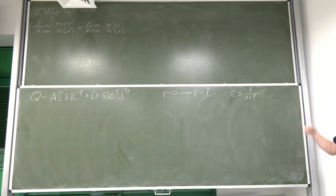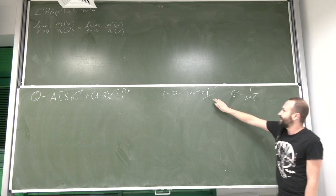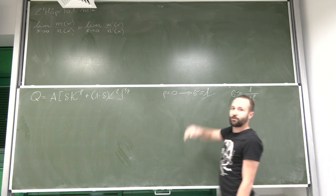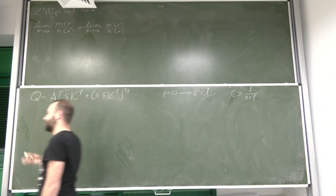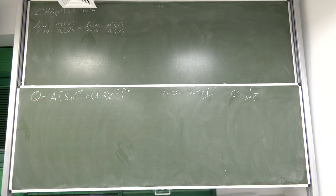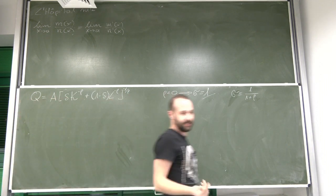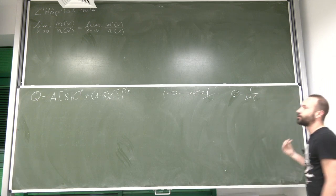However, we also know that this is the elasticity of substitution that we have in Cobb-Douglas production function. So there might be a connection. And actually there is, and we're going to show how it works.